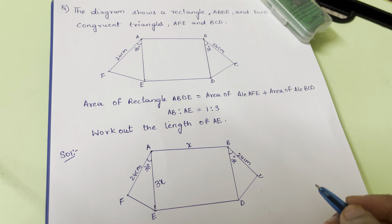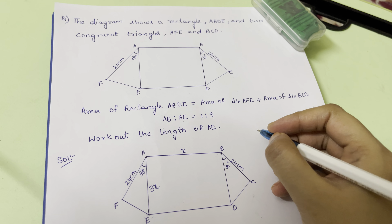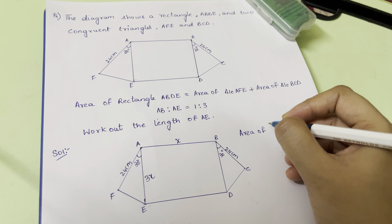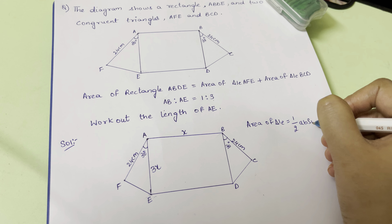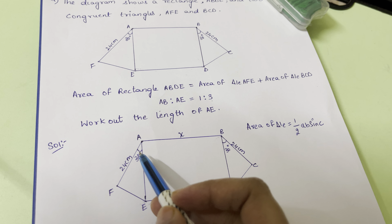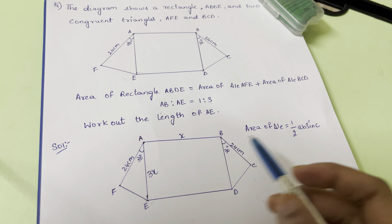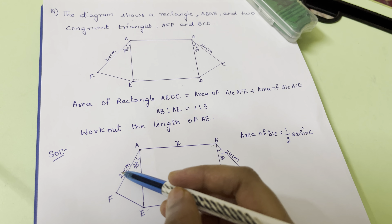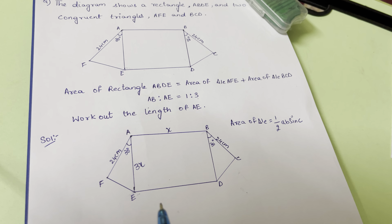Now we find the area of the triangle. The area of a triangle is equal to half·a·b·sin(C). We are going to use this formula because we have an angle of 30 degrees. Here, a and b are the adjacent sides of this angle — that is 24 cm and 3x.